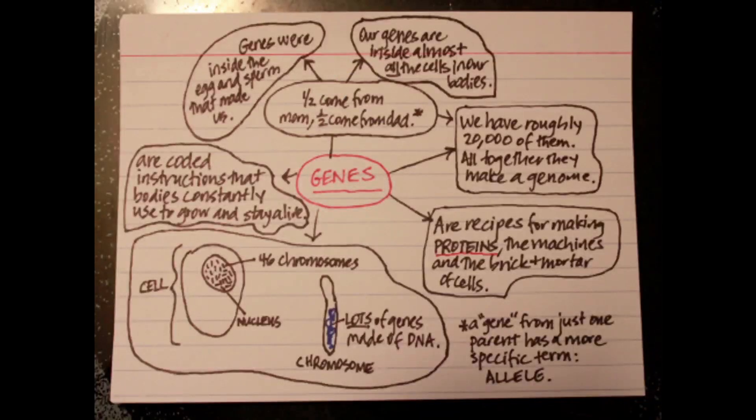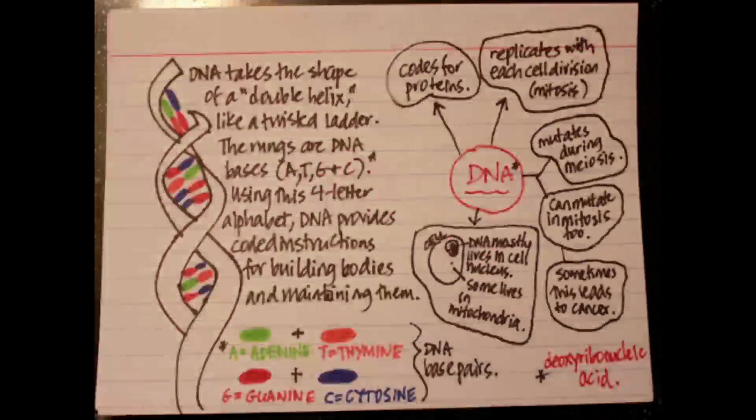A gene is a length of DNA that codes for a protein. We usually refer to a haploid number and a diploid number.